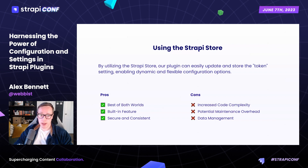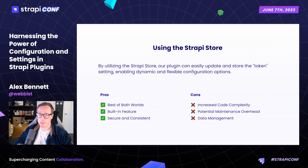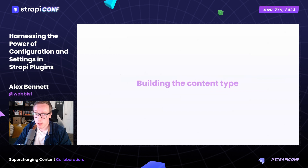The pros of the Strapi Store method are that it's a flexible and consistent API for accessing database-stored settings, a built-in Strapi feature designed for easy compatibility and use, and provides secure storage of settings with uniform handling. If we're assuming we're building an admin UI to go along with it, the cons are similar to our next method. This next approach involves leveraging the content type within Strapi, which provides powerful features such as admin panel controls and permission controls. While it requires more effort to set up, the benefits far outweigh the additional work.